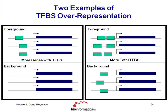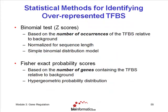Most tools will give you both statistics. The first method is the Fisher calculation, which looks at which set has more genes with binding sites. Then there's the binomial test looking at Z-scores for determining the number of occurrences and seeing if the rate of predictions is higher in the sequences in the first set than the second. The Z-scores are for the number of occurrences, and Fisher scores are for the number of genes with binding sites.